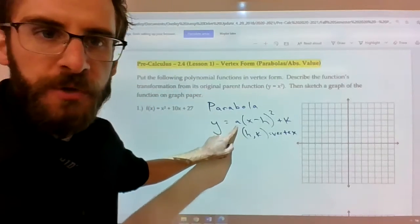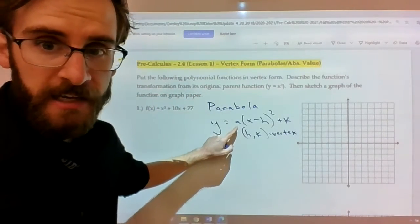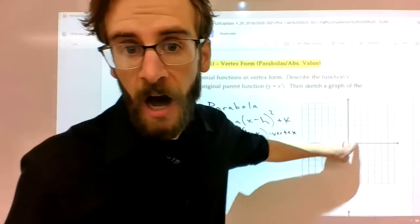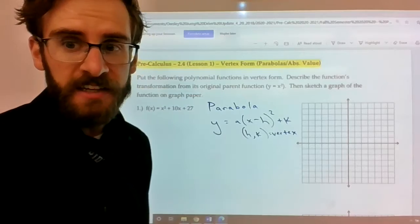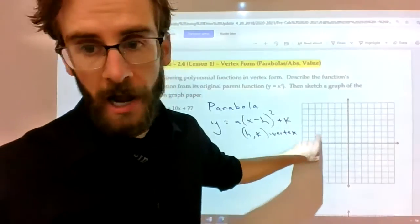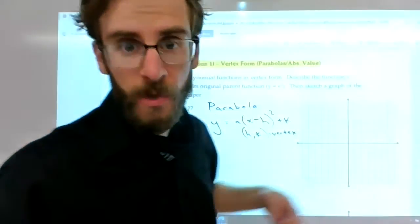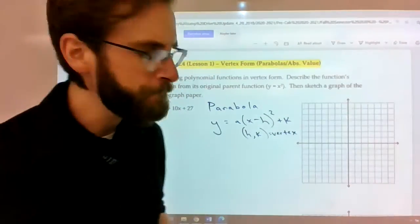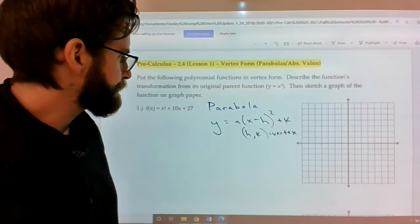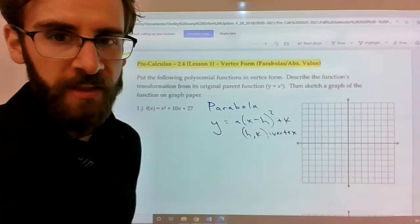The a term decides a few different things. It decides whether or not the parabola is going to open up versus downward. It's going to decide whether or not it's a wide parabola. We call that compression. Or if it's a skinny parabola, which is called stretching. So we're going to unpack all that stuff.